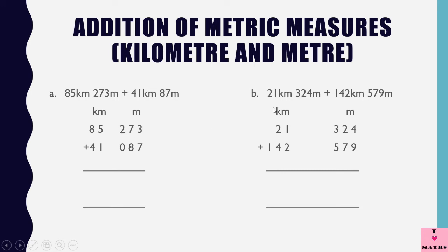So, 21 kilometers 324 meters added to 142 kilometers 579 meters. This is one quantity and this is another quantity. Under kilometers I write 21 and under meters I write 324. Then I write 142 kilometers and 579 meters. The addition is very simple, the way you have been doing in previous classes.